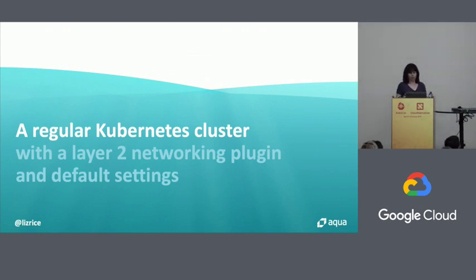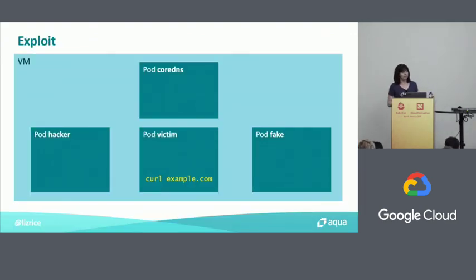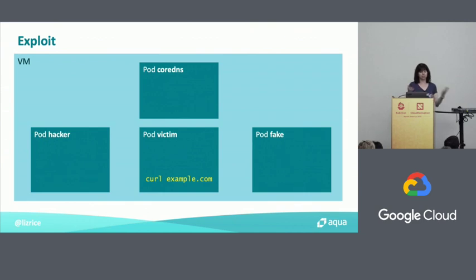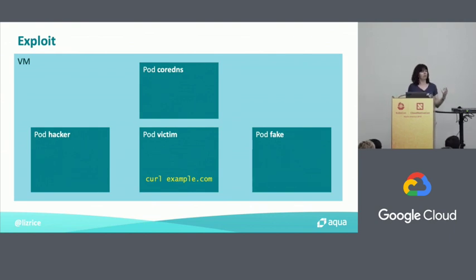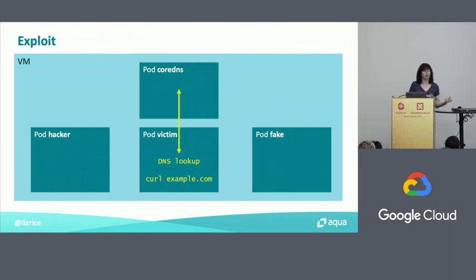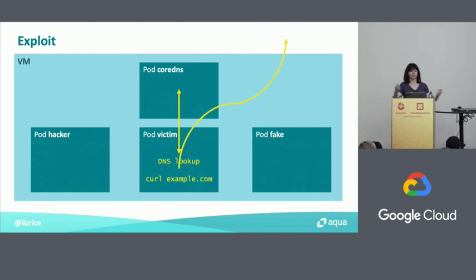Before I actually show you the exploit, I want to talk through what's going to happen. I have a victim pod, and the victim pod wants to make some kind of network request — in my case, to the outside world. When it does a curl request to example.com, it needs to do a DNS lookup. Under normal circumstances, that DNS lookup goes to CoreDNS, which returns the IP address associated with example.com, and the victim can make its request.